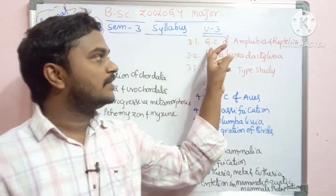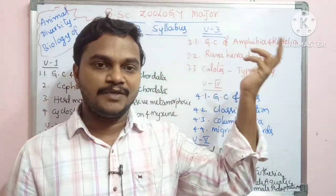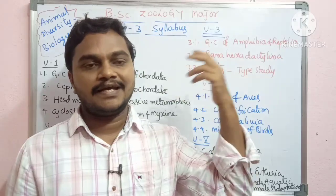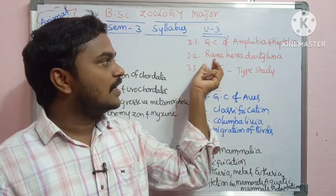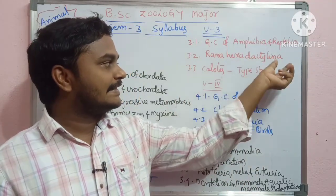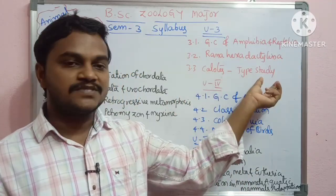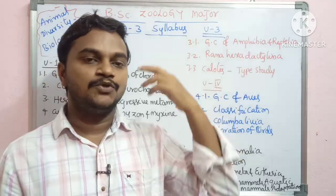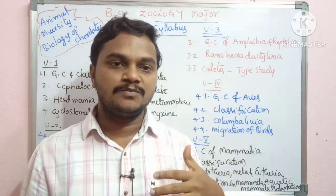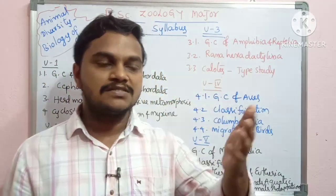Unit 3 covers general characters of Amphibia and general characters of Reptilia. Type studies include Rana, Hyla (Exadactylina), and Calotes — covering all organ systems including the brain and nervous system.